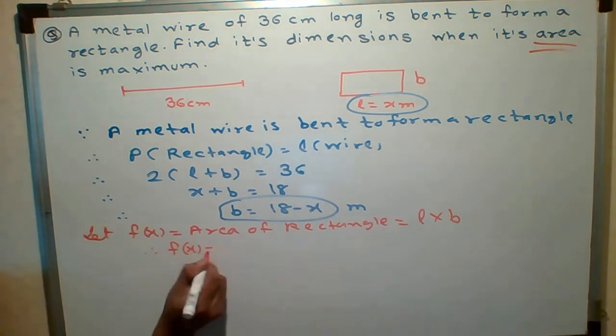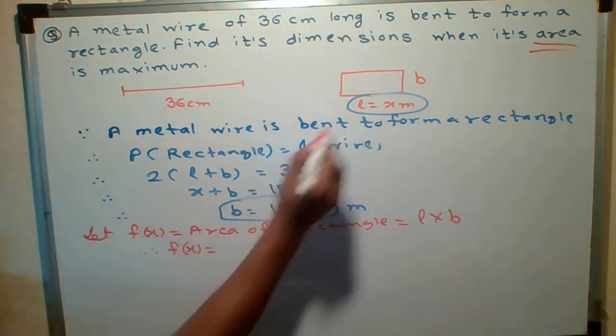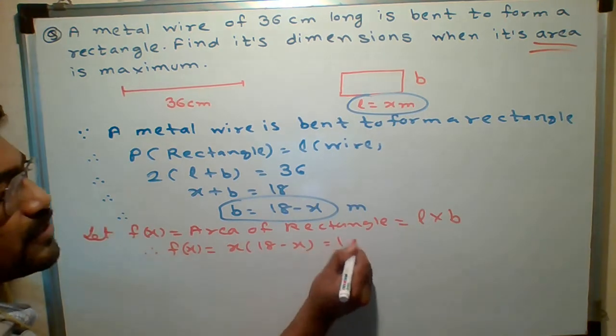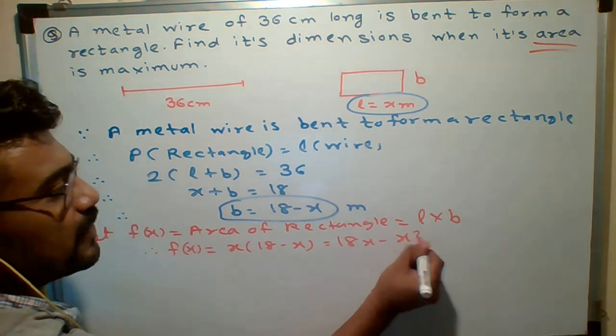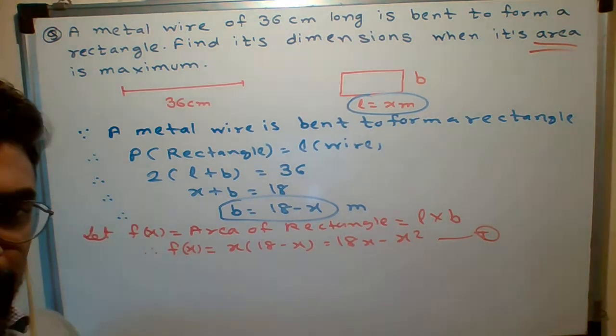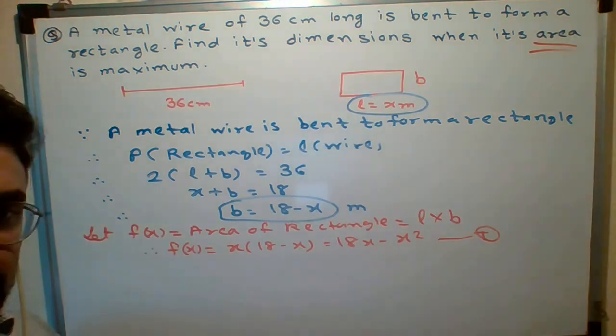That will tell me area of rectangle length into breadth. So students, f of x, length is what here? Length is x. And breadth is how much? 18 minus x. So what equation will be? 18x minus x square. Now you know how to solve. Try to solve and you tell me the answer.